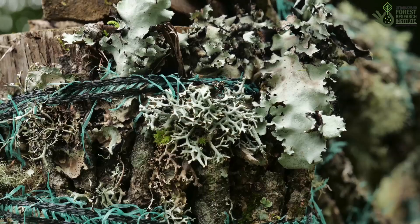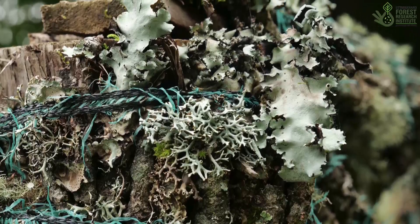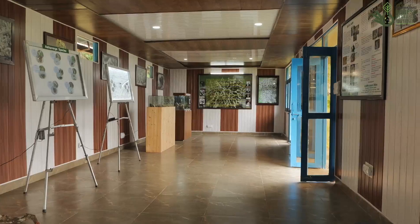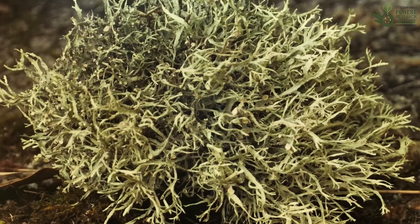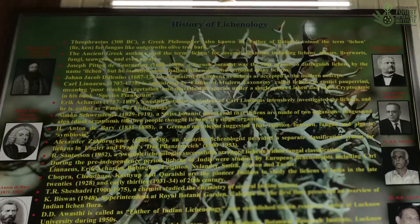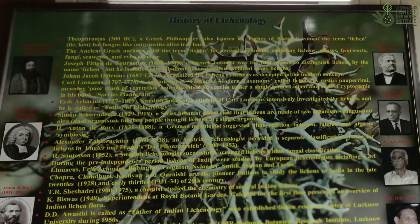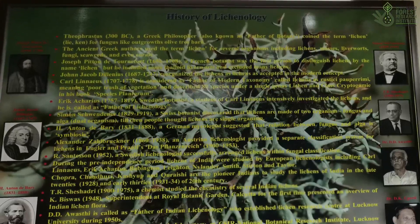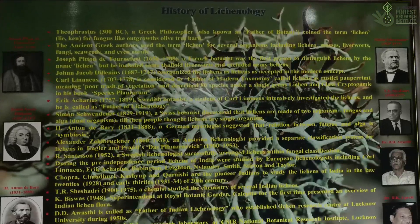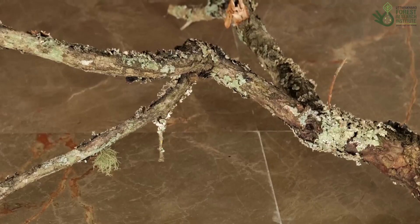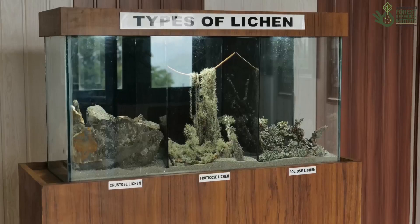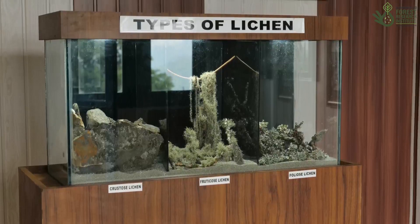Considered to be present from the Jurassic era, these species can survive in quite extreme conditions. The lichen garden has an interpretation center where one can see different types of lichens. The interpretation center also has a detailed history on the development of lichenology, with names of prominent scientists.